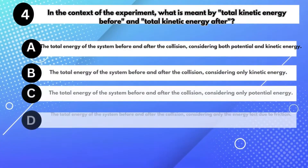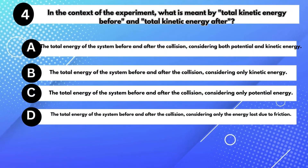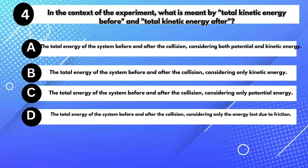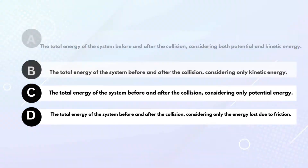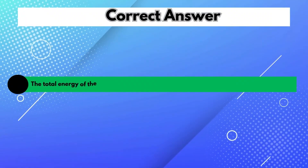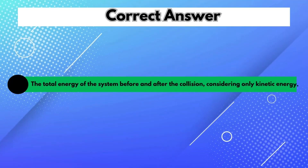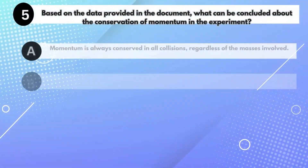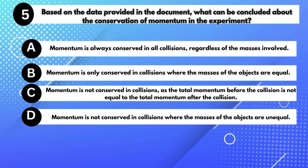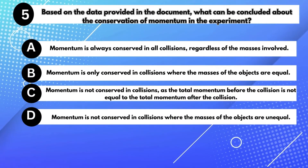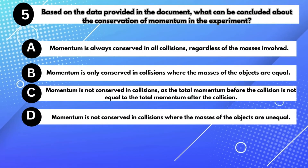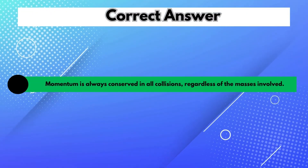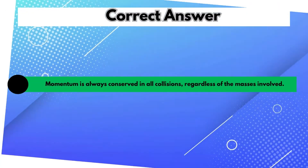In the context of the experiment, what is meant by total kinetic energy before and total kinetic energy after? Answer B: The total energy of the system before and after the collision, considering only kinetic energy. Based on the data provided, what can be concluded about the conservation of momentum? Answer A: Momentum is always conserved in all collisions, regardless of the masses involved.